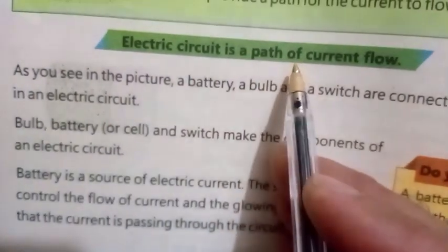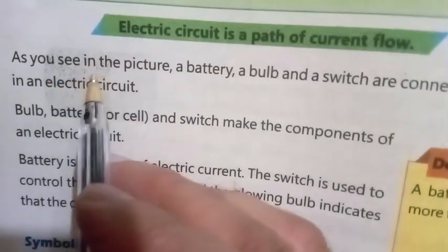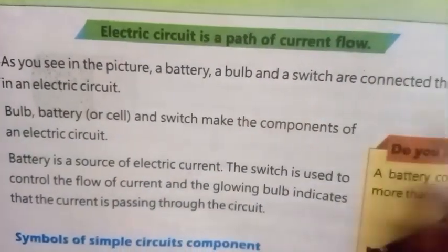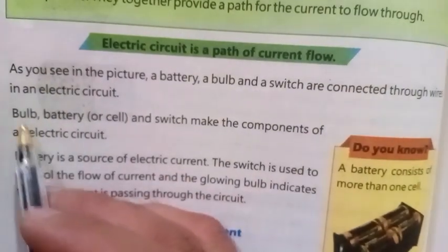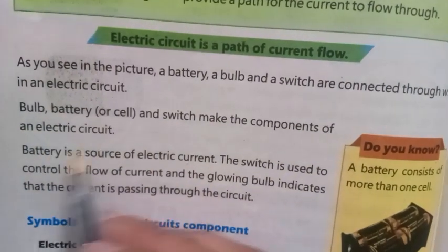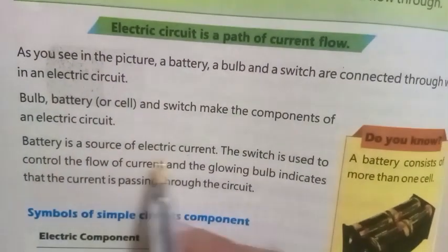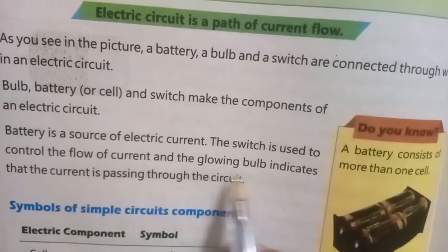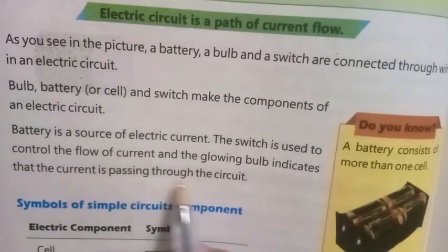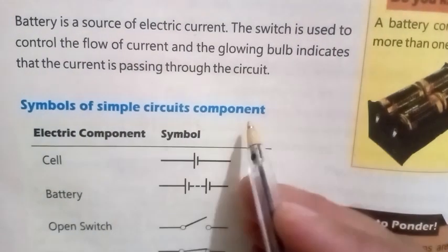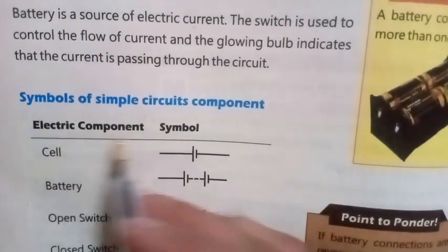An electric circuit is a path of current flow. As you see in the picture, a battery, a bulb, and a switch are connected through wires in an electric circuit. The bulb, battery or cell, and switch make the components of an electric circuit. The battery is a source of electric current. The switch is used to control the flow of current, and the glowing bulb indicates that current is passing through the circuit. Do you know a battery consists of more than one cell?